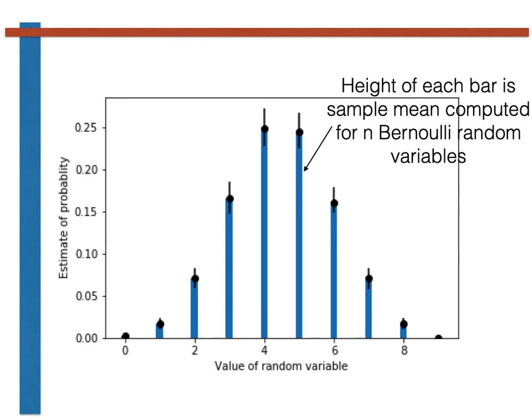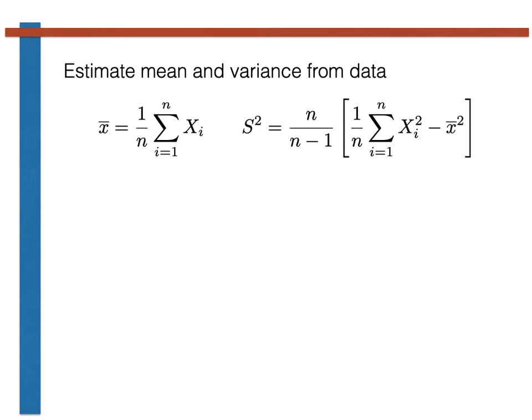I mention this because suppose we are asked to estimate the mean and variance of a Bernoulli random variable using the formulas that we have just introduced. If x_i is a Bernoulli random variable, then x_i here will be 1 or 0, and similarly x_i squared will also be 1 or 0.